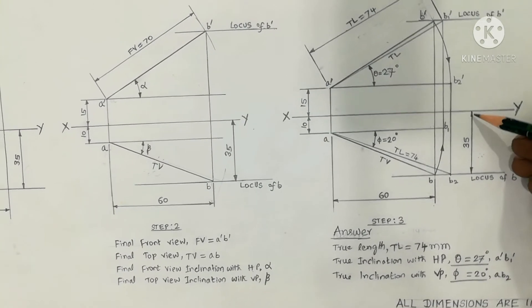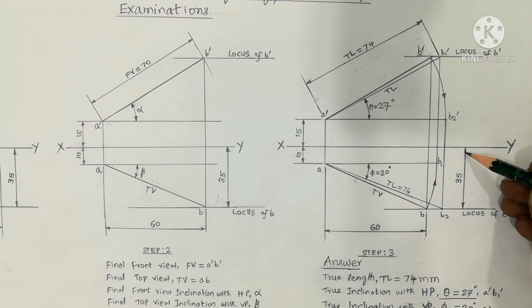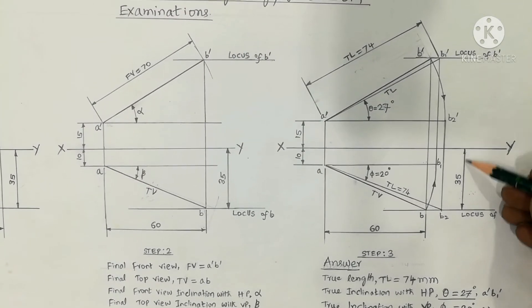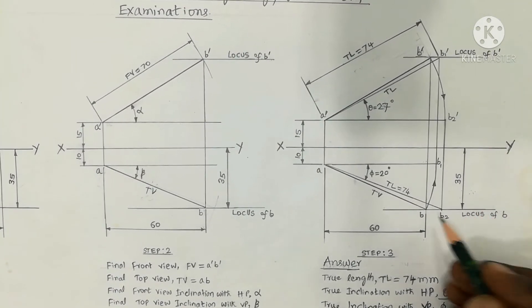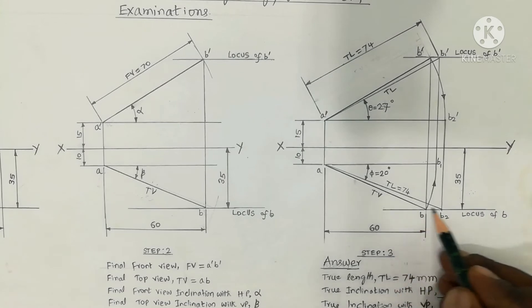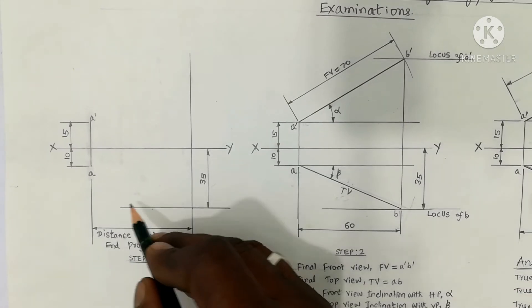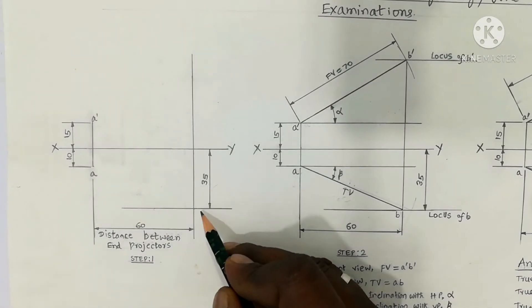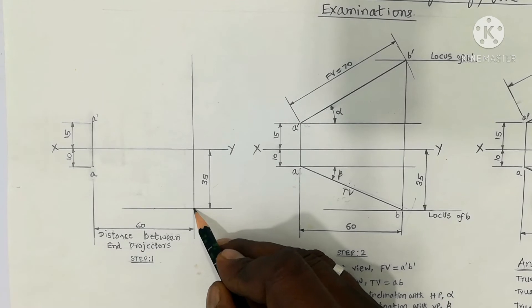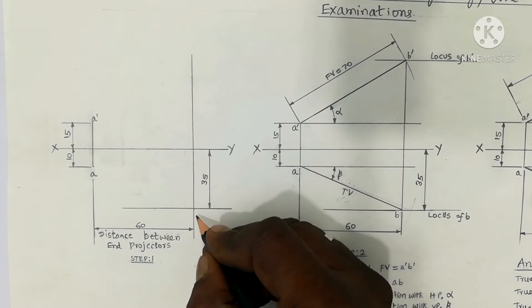35mm is below the XY line. Draw a horizontal line; in the point of intersection of that horizontal line with the vertical projector line, the point is marked as B.